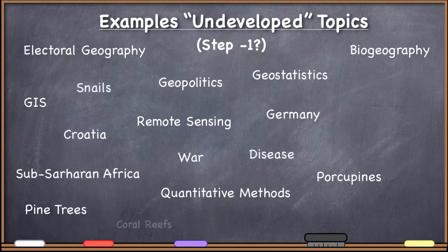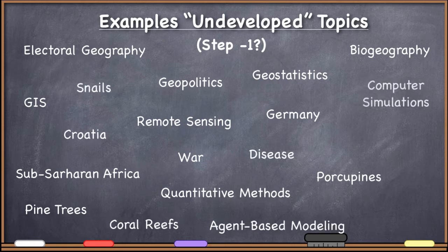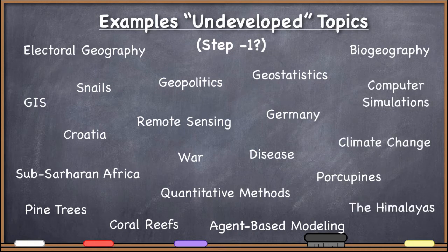Disease, coral reefs, agent-based modeling, computer simulations, climate change, or the Himalayas. These all sound like really interesting things to study, and they are certainly topics that can be studied. They're the kinds of things you hear someone say briefly — 'What do you study?' 'Oh, I'm interested in biogeography,' or 'I'm studying Germany,' or 'I'm a geostatistician.' These are topics — somewhat undeveloped. Unfortunately, I see a lot of students try to start a GIS project saying 'I'm trying to study climate change' or 'I'm trying to study the Himalayas.' They're not on step one.